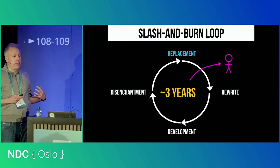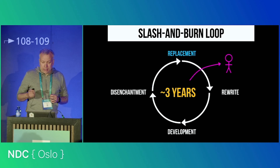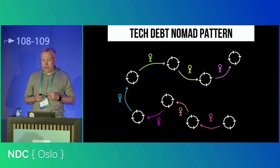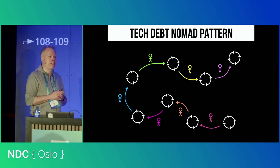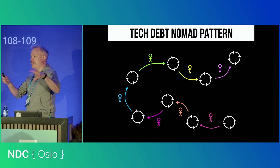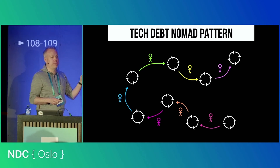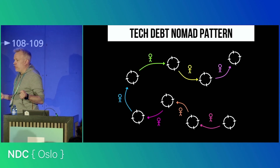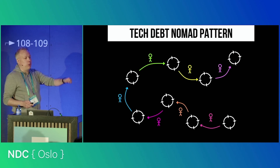This process, from my experience, takes roughly three years on average. This is the slash and burn loop. Now, if you zoom out, you might see a pattern that's something like this — there's not just one loop, there's a lot of loops. And you have these tech leads acting as tech debt nomads, basically going from loop to loop, setting fire to some system, rebuilding it to their image, and then, after a couple of years, abandoning it and moving on. And the good thing is maybe someone will torch that next.